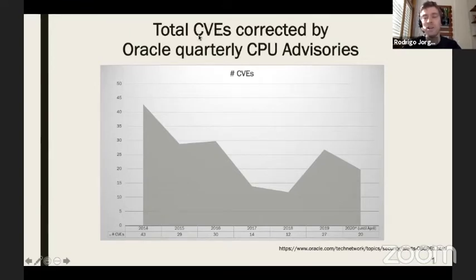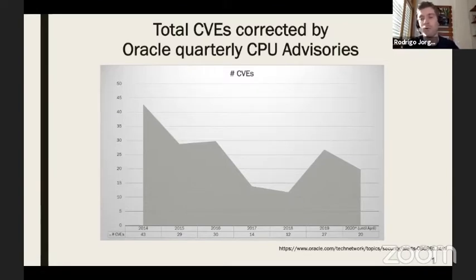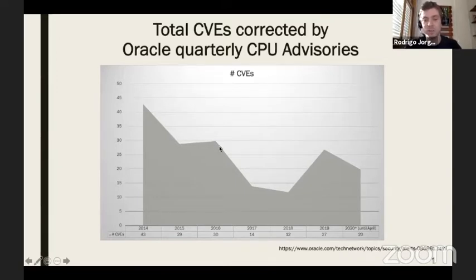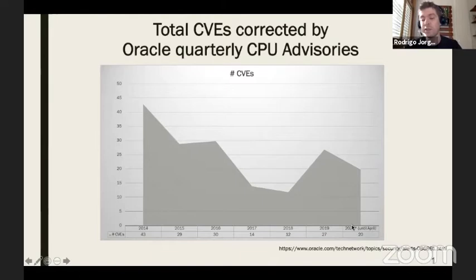In 2014 we had 43 CVEs — CVEs are Common Vulnerabilities and Exposures raised for an application, and Oracle corrects them. I only grouped the database-related CVEs here. The numbers were decreasing, but from 2018 to 2019 they increased again, and by April 2020, through the second-quarter CPU cycle, we already had 20 CVEs fixed. We'll probably end the year around 13, similar to 2016.